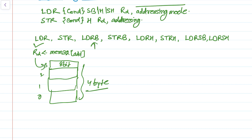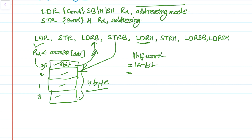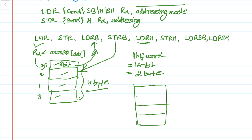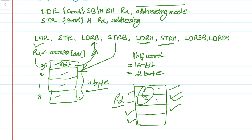LDRB is the single byte load — that means it loads only one of the individual bytes: byte 0, 1, 2, or 3. Similarly STRB stores only a single byte into memory. LDRH is the load half word instruction — half word stands for 16-bit, which is 2 bytes. Those 2 bytes out of 4 bytes of memory can be loaded into Rd.